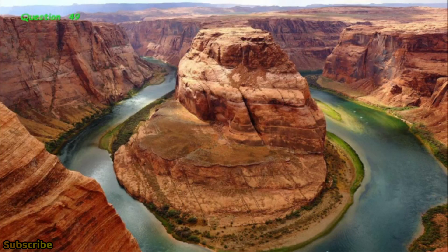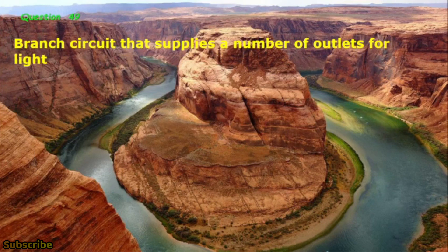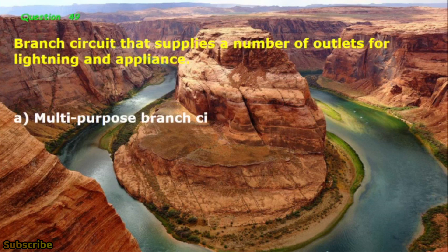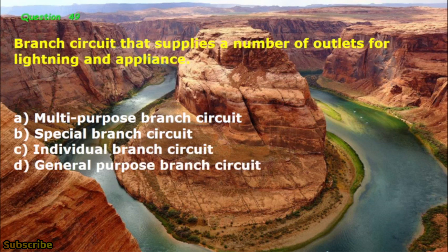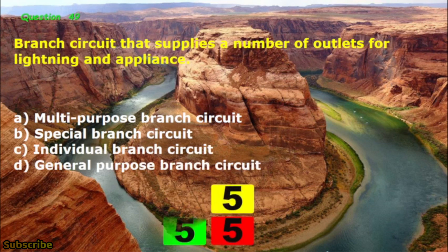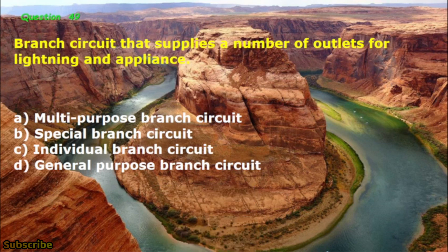Question No. 49: Branch circuit that supplies a number of outlets for lighting and appliances. A. Multipurpose branch circuit, B. Special branch circuit, C. Individual branch circuit, D. General purpose branch circuit. The correct answer is letter D: General purpose branch circuit.